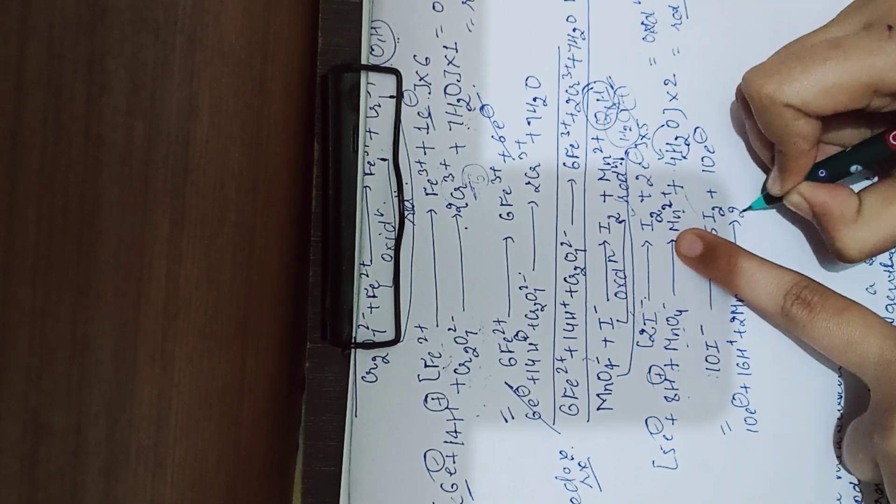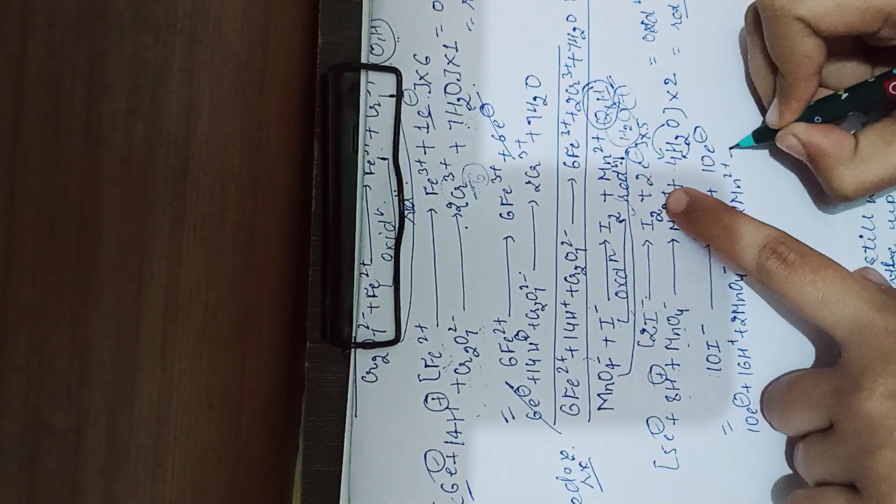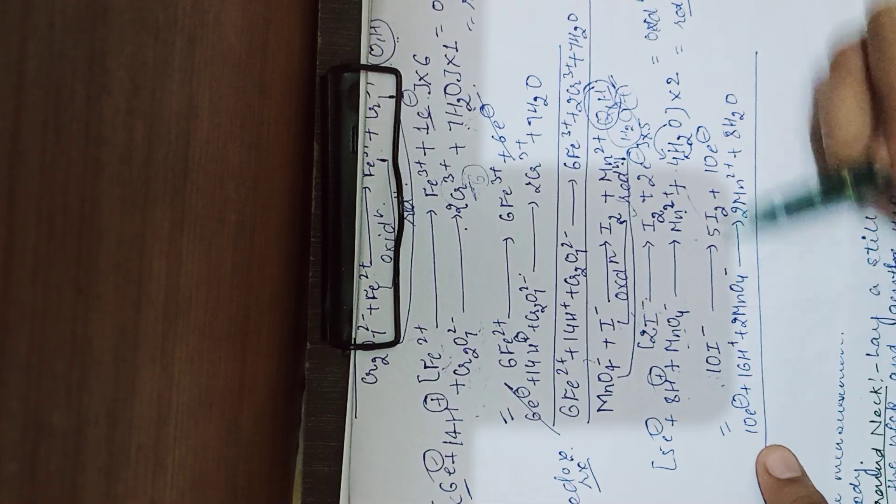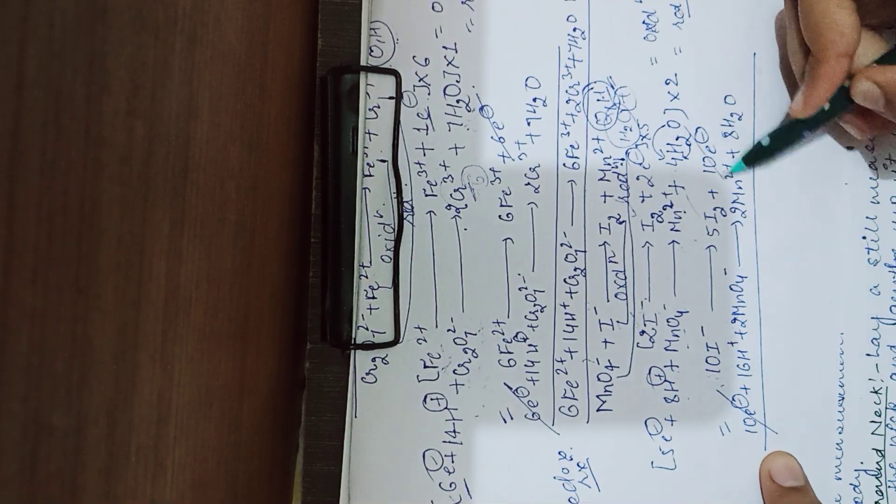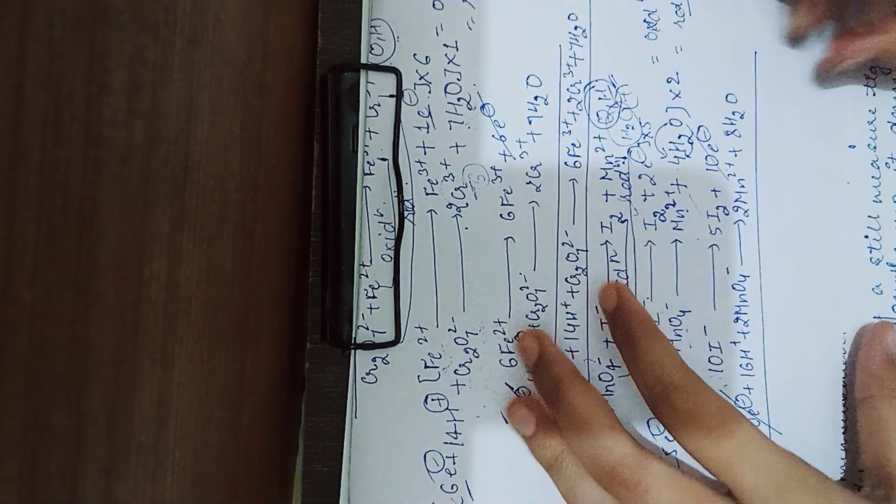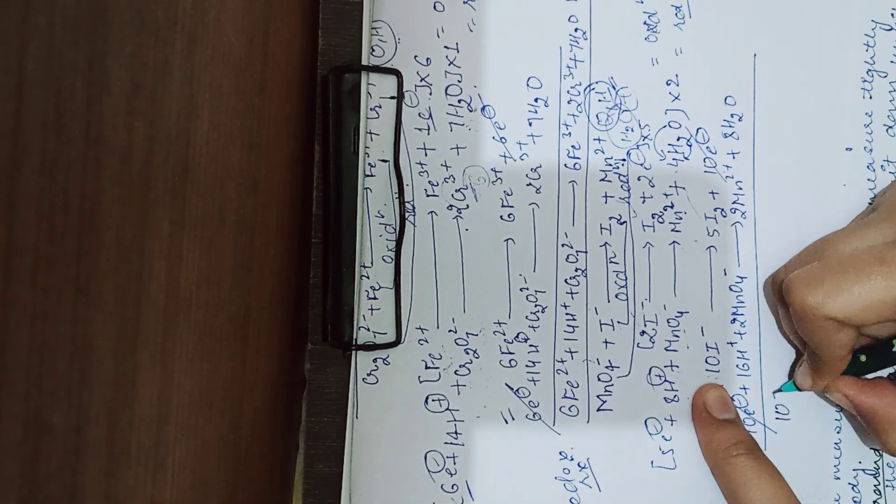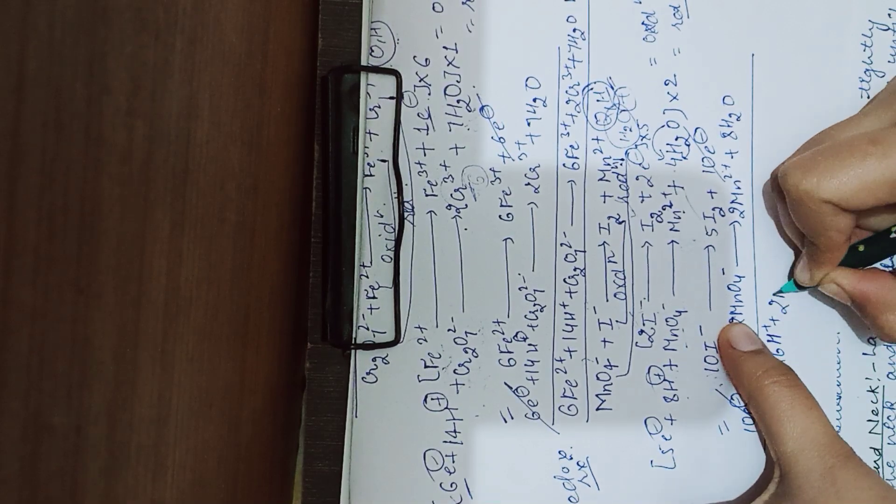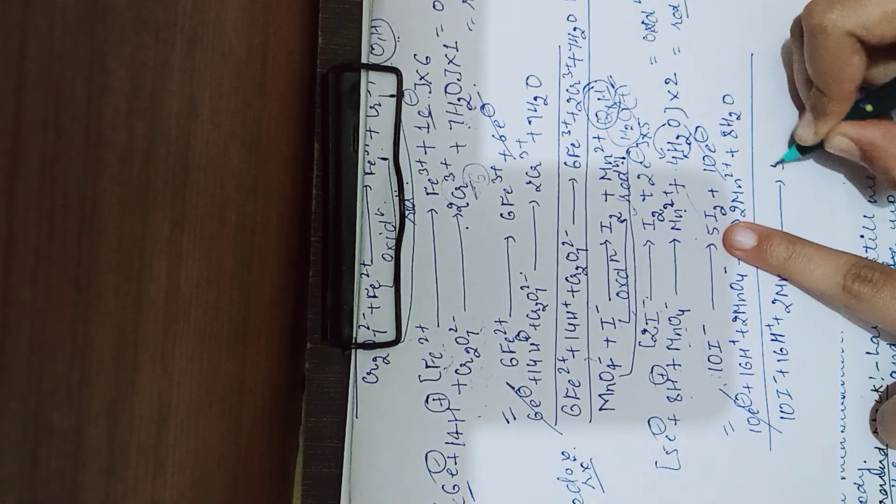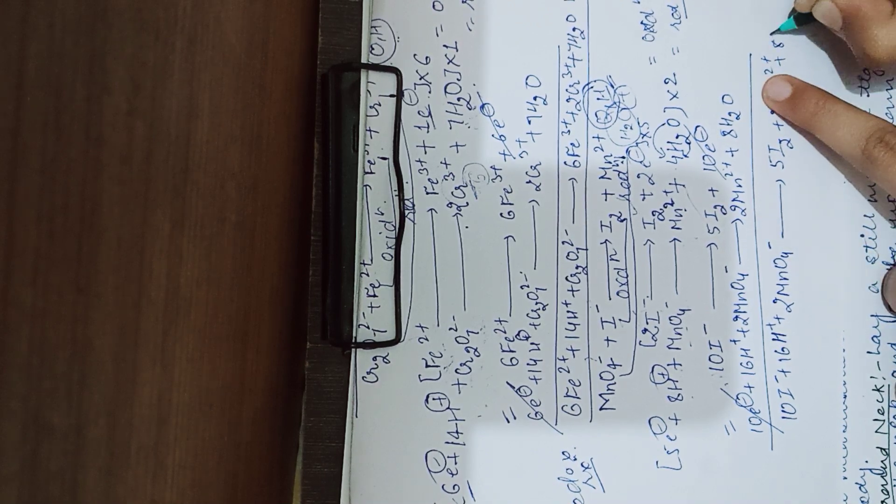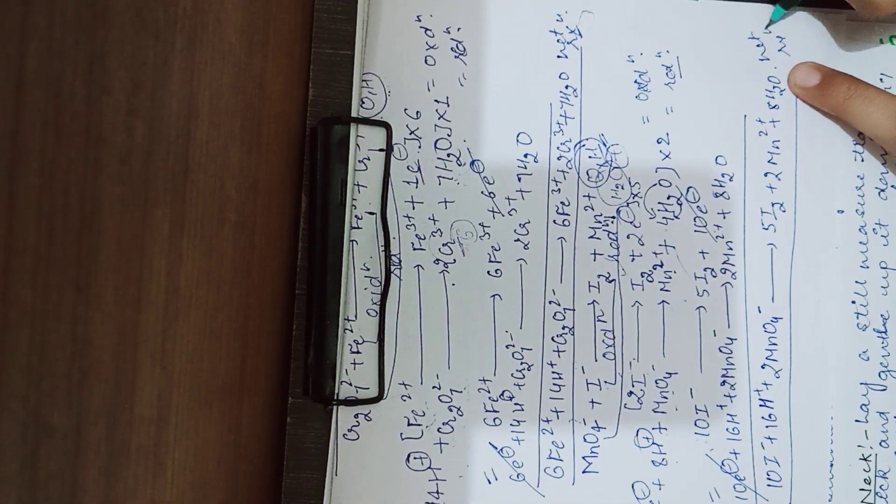Adding water molecules: 16 H positive plus 2 MnO4 negative plus 10 I negative gives you 5 I2 plus 2 Mn2 plus plus 8 H2O. So this is your final net redox reaction.